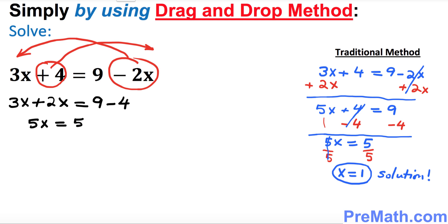That's it. 3x plus 2x, these are like terms, become 5x equals to 9 take away 4 is 5. Now simplify both sides by dividing by 5, so x turns out to be 1. That is our solution.